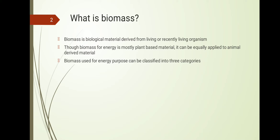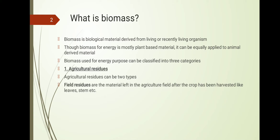The biomass used for energy purposes can be classified into three categories. The first is agriculture residues — byproducts or waste generated from particular agriculture crops like wheat, rice, sugarcane, and corn. Agriculture residues can be of two types. The first is field residues: material left in the agricultural field itself during harvesting, such as leaves and stems.